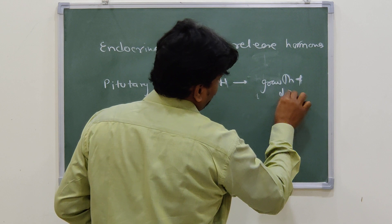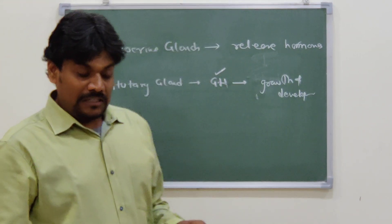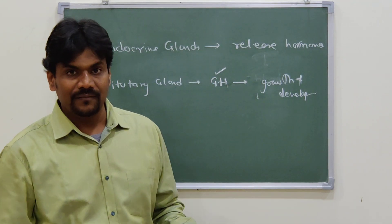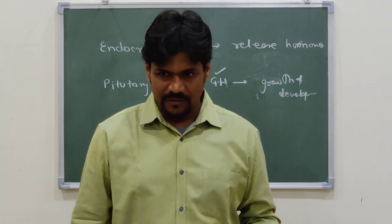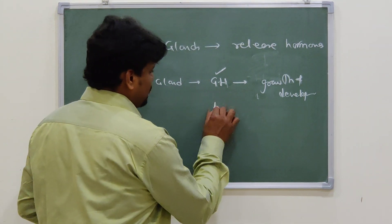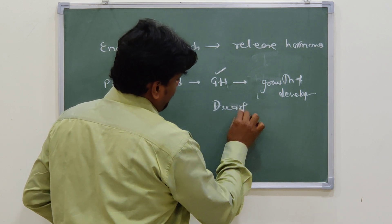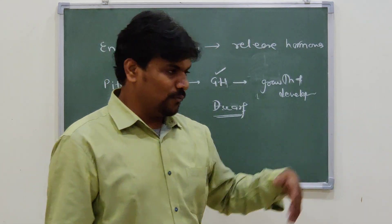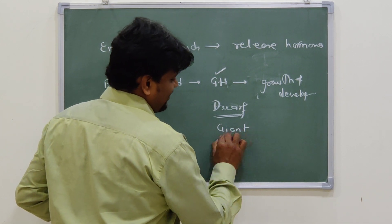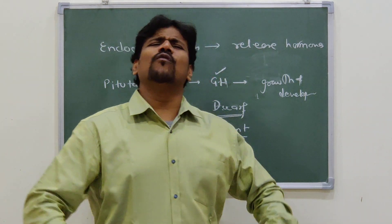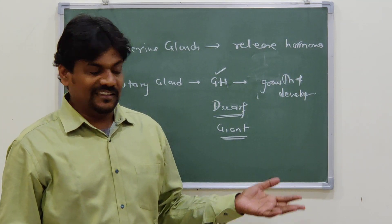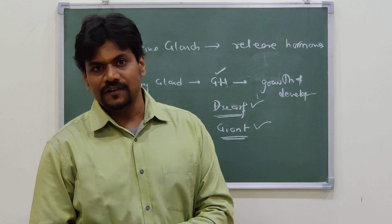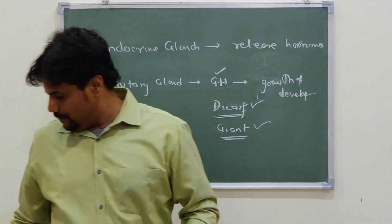If a person has lower concentrations of growth hormone from the pituitary gland, their growth may not be normal and they might be called a dwarf. Similarly, if somebody has higher concentrations of growth hormone, they might become a giant — someone who is overgrown. You may have seen The Great Khali as an example. These disorders are called dwarfism and giantism respectively.